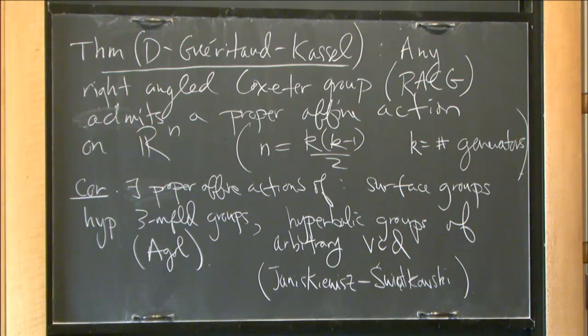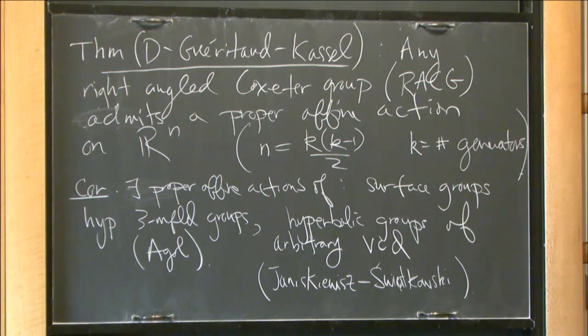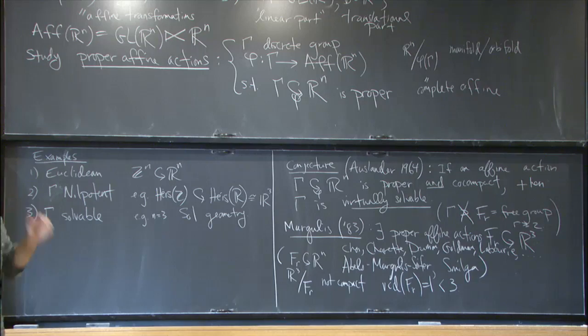The moral is: I'm going to show you a new way to make lots of interesting proper affine actions of very complicated groups. They won't be anywhere close to being co-compact, just like the free group examples. But it's at least an indication that if you're going to work on this conjecture or look for interesting affine manifolds, there might be a lot out there to consider.